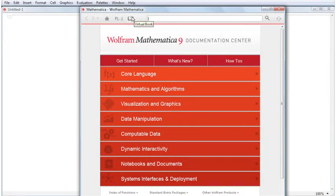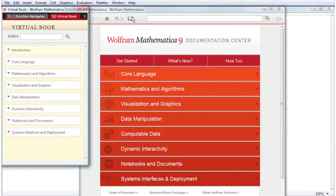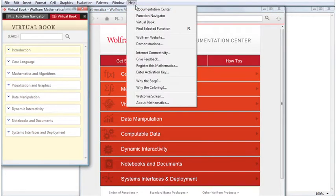Open the Virtual Book by clicking the toolbar icon in the Documentation Center, or by selecting Help Virtual Book.